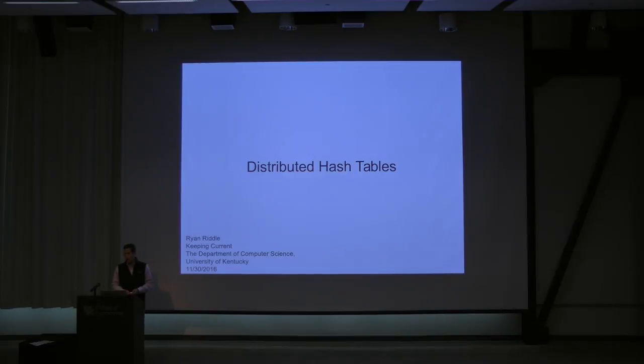A distributed hash table is a network of computers that provides a lookup service similar to the hash tables that you typically think of. So given a key, you can find the value associated with that key efficiently. When I say efficiently, I guess I should clarify, when you think of hash tables, you usually think of the main advantage being that you get constant time lookups.